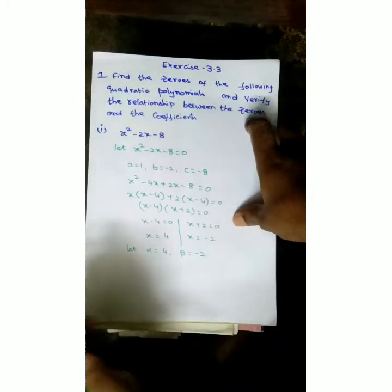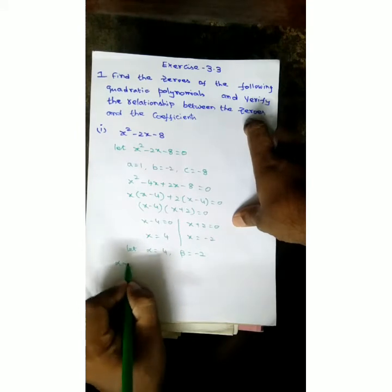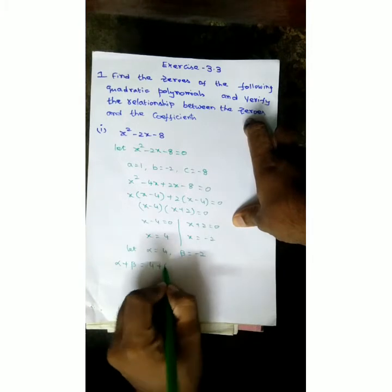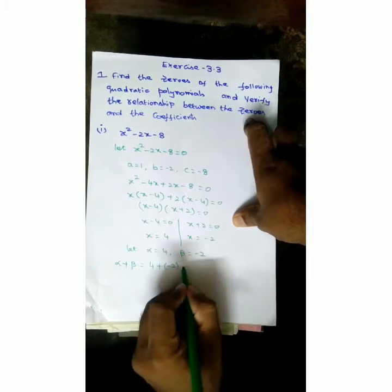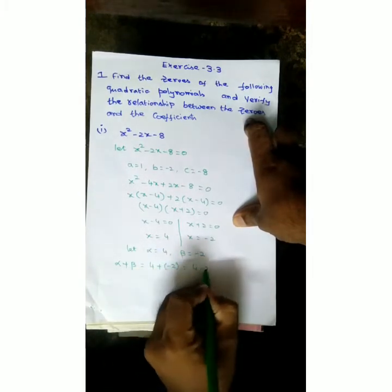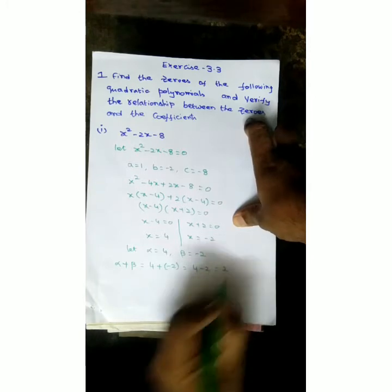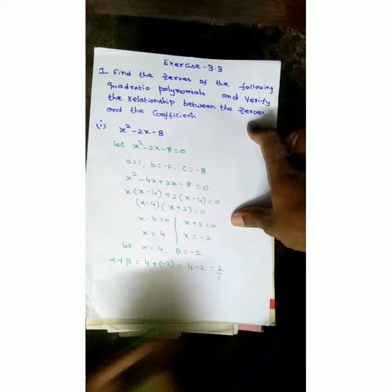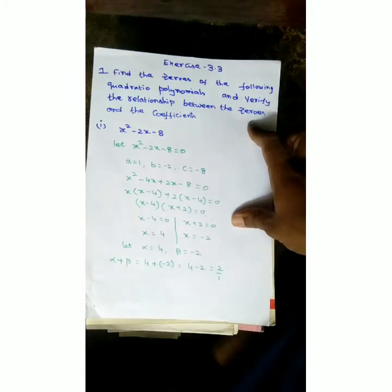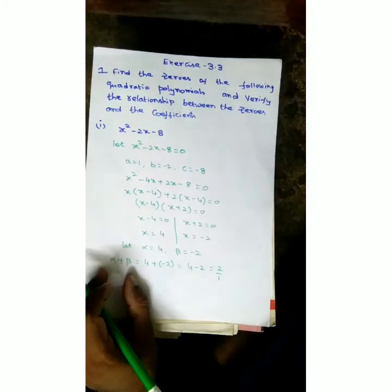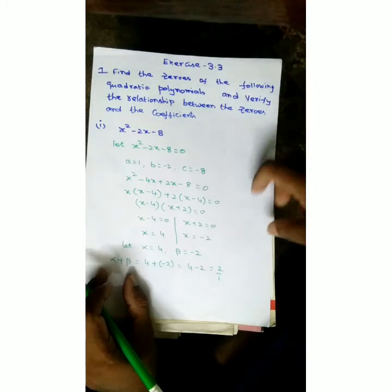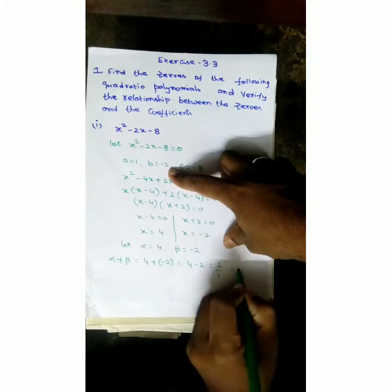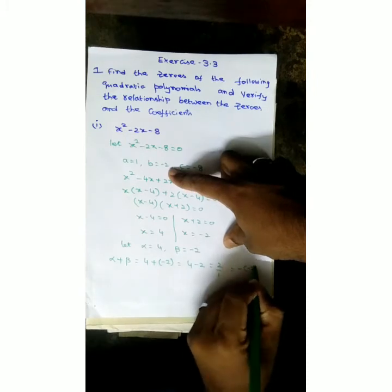First we verify the sum of the zeros. Alpha plus beta is 4 plus minus 2. Plus into minus is minus, so 4 minus 2 gives 2. This is 2 by 1. Alpha plus beta should equal minus b by a. The b value is minus 2, a is 1. So minus b by a is minus of minus 2 by 1, which is 2 by 1.